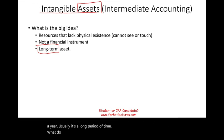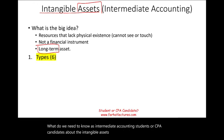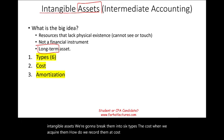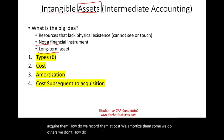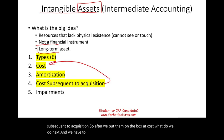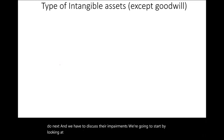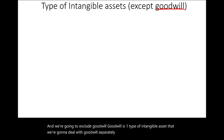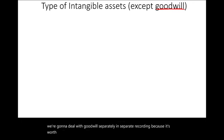What do we need to know as intermediate accounting students or CPA candidates about intangible assets? We need to know the different types — we're going to break them into six types — the cost when we acquire them, how we record them at cost, how we amortize them (some we do, others we don't), how we deal with costs subsequent to acquisition, and we have to discuss their impairments. We're going to start by looking at the types and exclude goodwill, which we'll deal with separately.